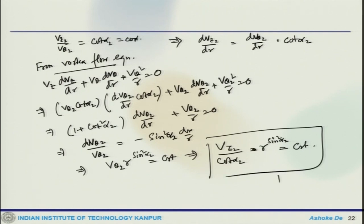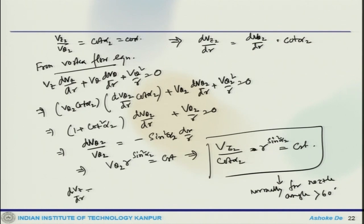This result is valid normally for nozzle angles greater than 60 degrees. In this design, dvz/dr is not equal to zero, unlike in the free vortex design.